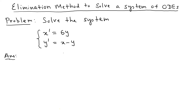We can eliminate a variable in two different ways: by taking the derivative of the first equation or the derivative of the second equation. I'll call them equation one and equation two for reference. I'm going to differentiate equation two.